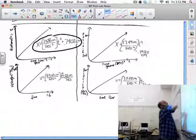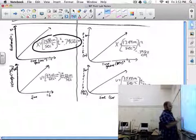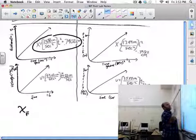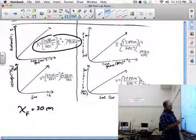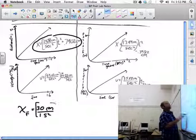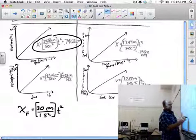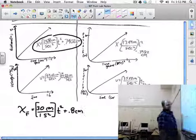I'll start with this equation. x final equals 30 centimeters per second squared times t squared plus 0.8 centimeters.